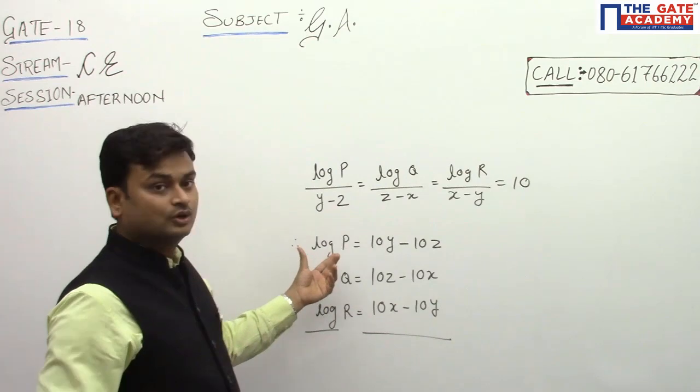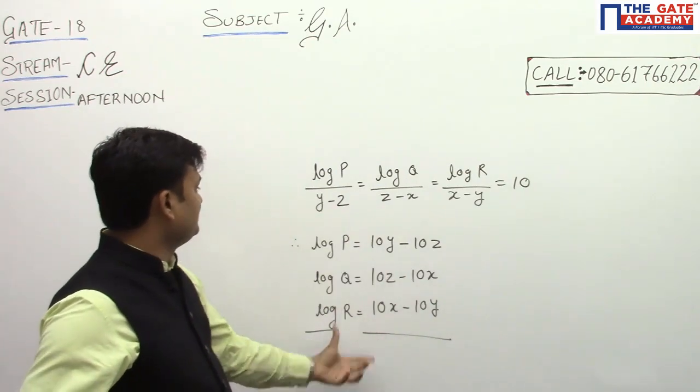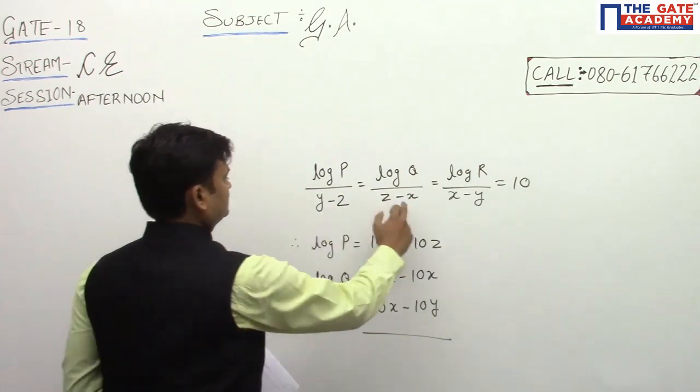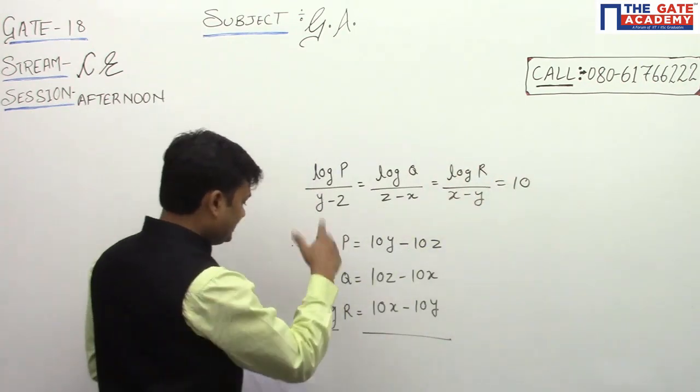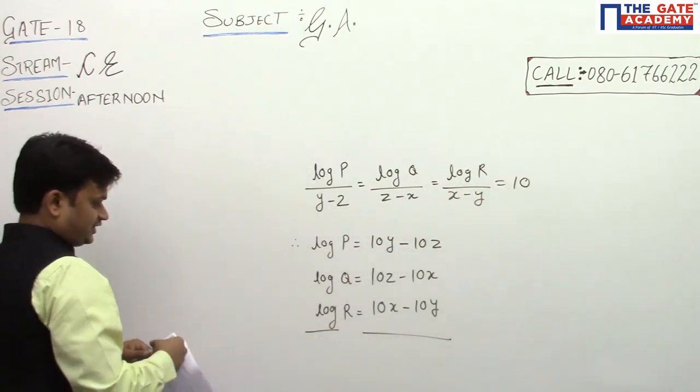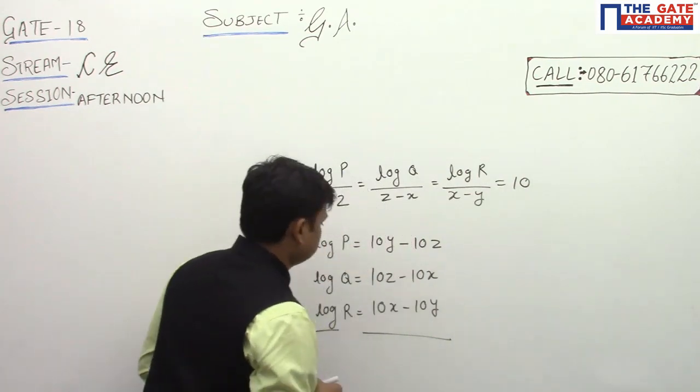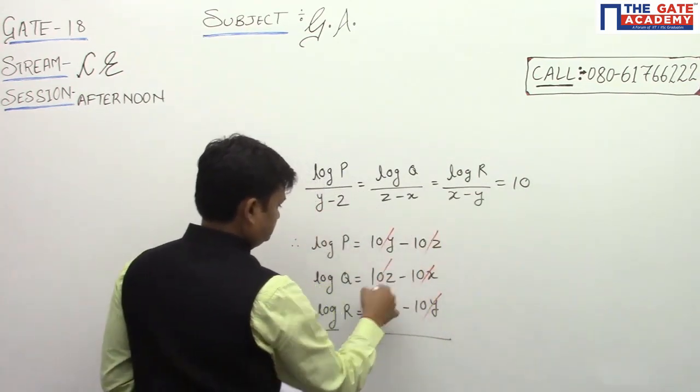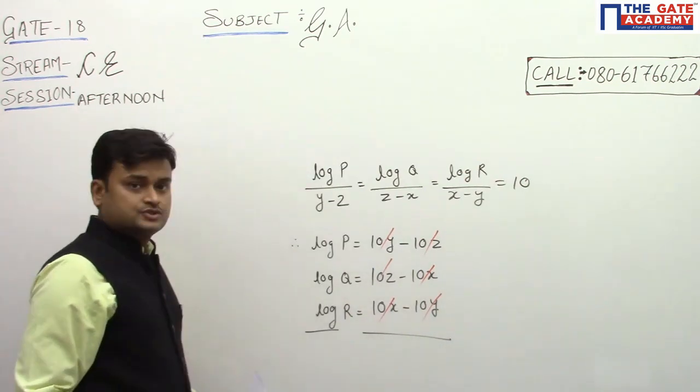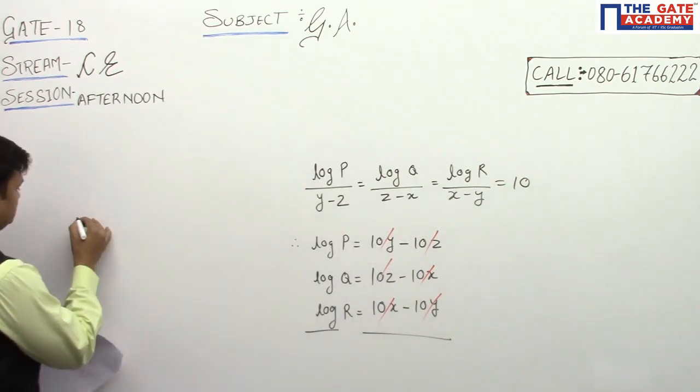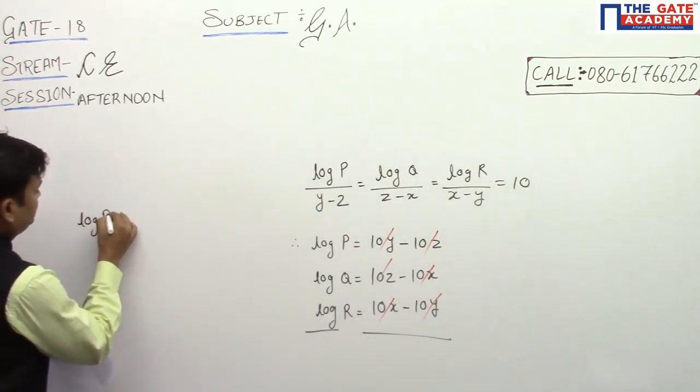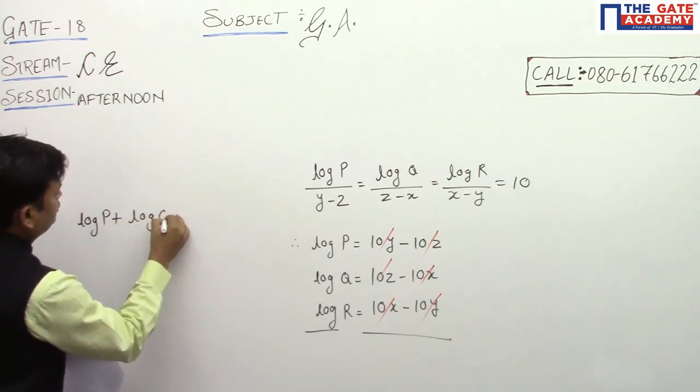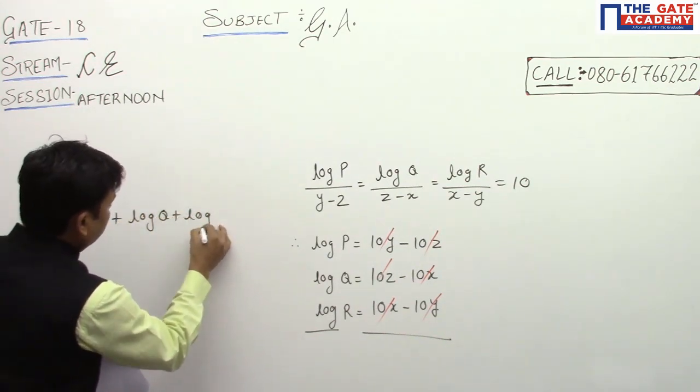So if I have to simplify, I have just multiplied there. So if I'll add these three, what will happen? Now log P + log Q + log R will...